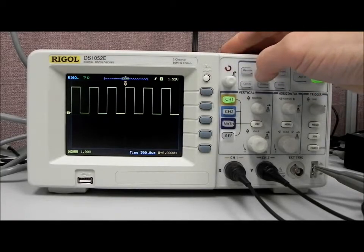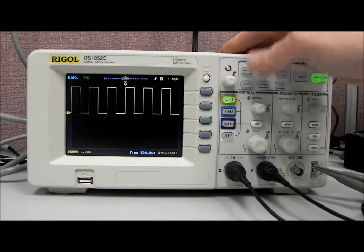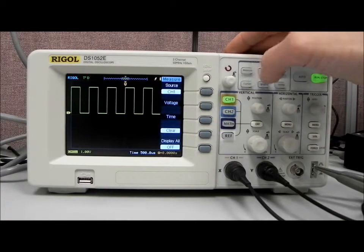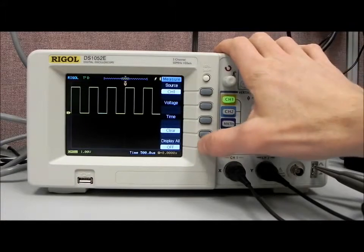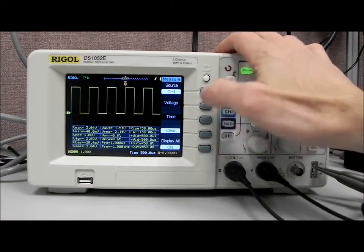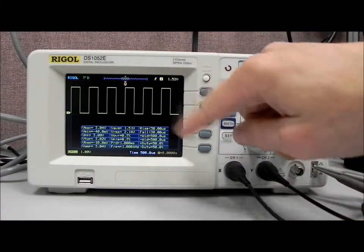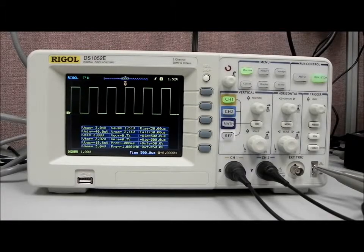We can measure two channels simultaneously, it's just a lot going on on the screen for demonstration. So what we can do is hit the measure key, and we're going to measure channel 1. Now what I can do is I can hit display on, and that will bring up all of the measurements that I have capable or enabled on that particular channel.